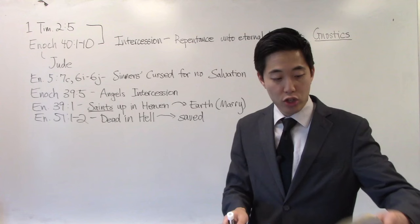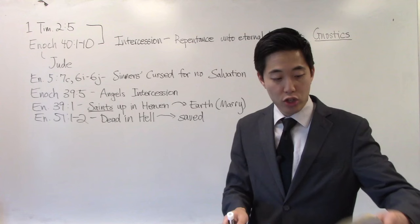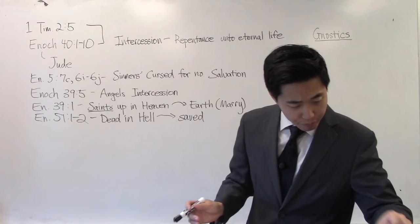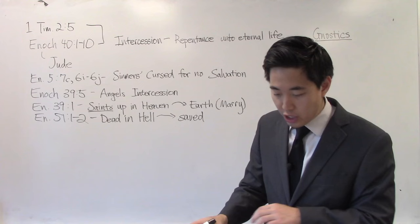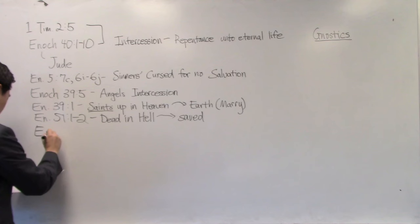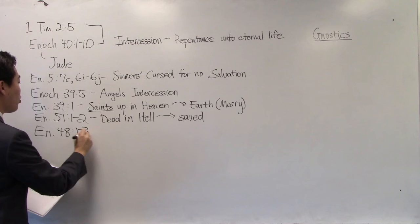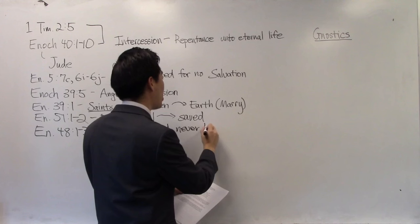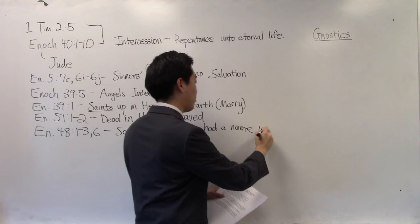John chapter 1, verse 1. Didn't you know Jesus did not receive his name until much, much later. Jesus was not named at all. God was not named at all for eternity until later on. Look at John chapter 1. All right, Enoch chapter 48. This is heresy right here. They teach right here in Enoch chapter 48, verse 1 through 3 and verse 6 that the Son of God never had a name. Son of God never had a name until God named him later on.